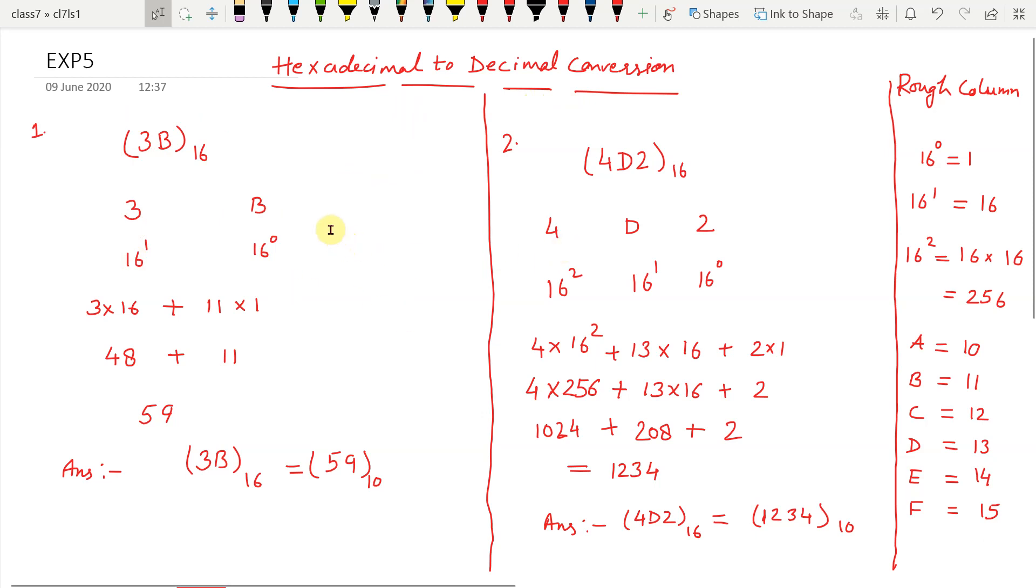Multiply the numbers starting from the right hand side with the increasing power of 16. The power of 16 will start from 0 and then increase it 1 by 1.